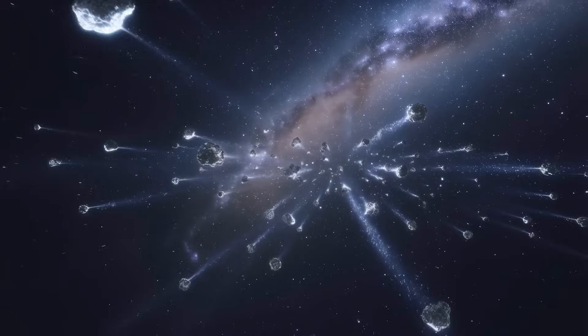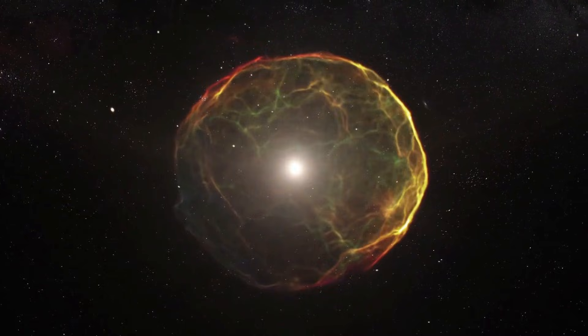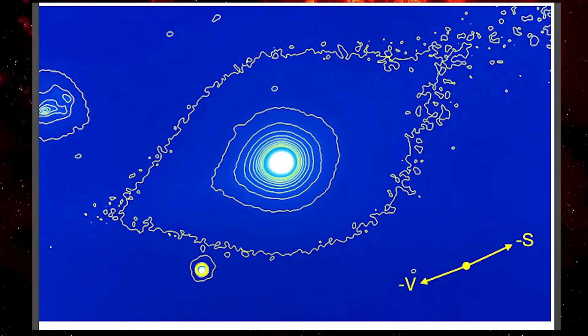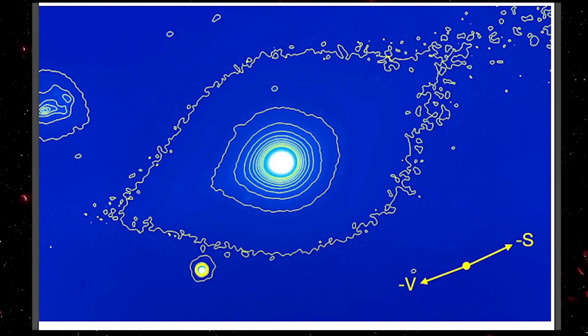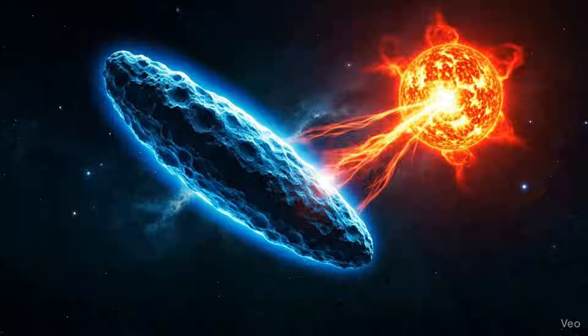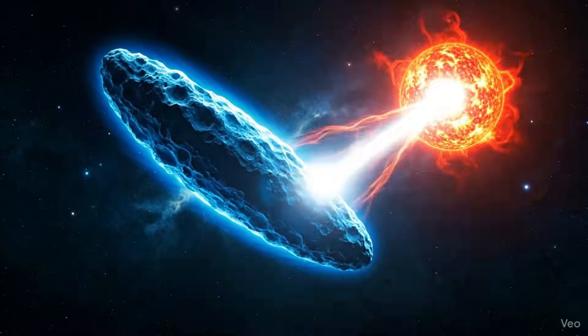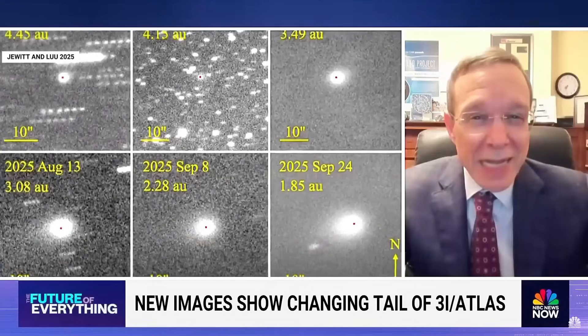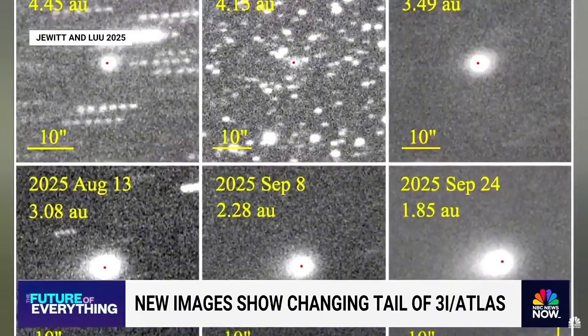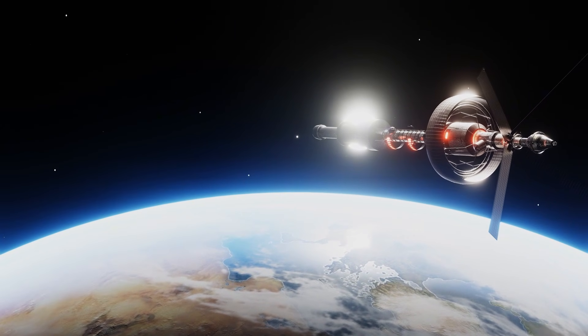NASA assessment crucial. Speculation about artificial origins circulated. Blade structures noticed. Geometric precision observed. Acceleration detected. And internet exploded. Spacecraft theories. Alien probe hypotheses. Interstellar vehicle speculation. But NASA analysis? Definitive natural conclusion. Chemical composition wrong for manufactured object. Behavior consistent with exotic comet. Anomalies explainable by unusual formation history. Not by intelligence. Not by engineering. By physics in extreme conditions.